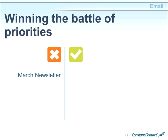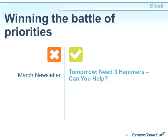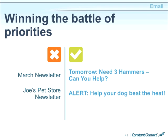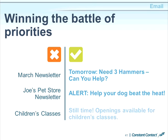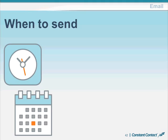Here are examples of the Two-Two-Two Principle in practice. 'March Newsletter' is not compelling. 'Tomorrow — Need Three Hammers' is action-based and much more likely to be opened. 'Joe's Pet Store Newsletter' will have a low open rate, but 'Alert: Help Your Dog Beat the Heat' will get Joe's newsletter opened. 'Children's Classes' is not exciting, but 'Still Time — Openings Available' creates urgency.